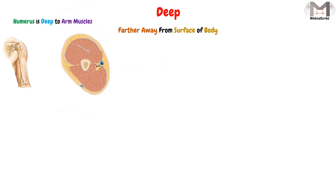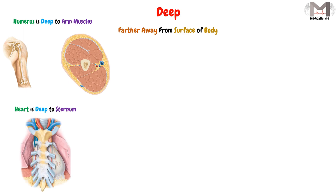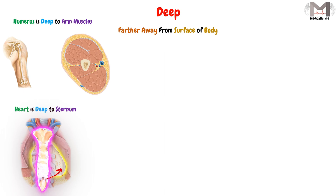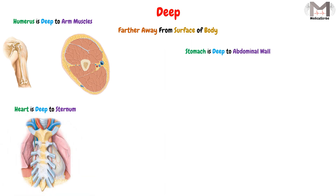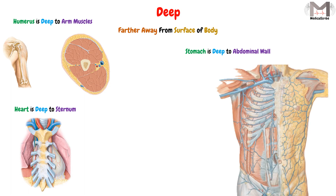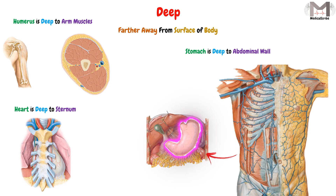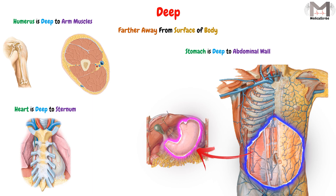For example, if we say the heart is deep to the sternum, that means the heart will be behind the sternum, or farther away from the surface in comparison with the sternum. And finally, if we say the stomach is deep to the abdominal wall, that means the stomach is deeper than the abdominal wall, or behind the abdominal wall from the body surface.